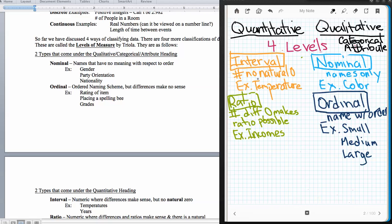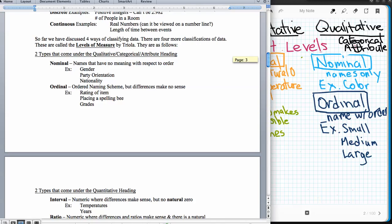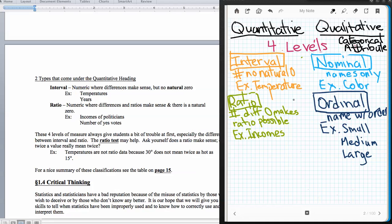Interval data has no natural zero, but those differences do make sense. Examples of interval data are temperatures and years. If you look at different temperature scales like Celsius and Fahrenheit, zero on the Celsius scale means freezing of water. Zero on the Fahrenheit scale does not mean the same thing. 32 degrees Fahrenheit is where water freezes. The zero is a very arbitrary assessment. The same is true in years. The Chinese calendar, Mayan calendar, or Gregorian calendar all have different starting places, different zero years. That's what makes interval data. No natural zero.